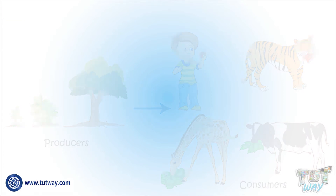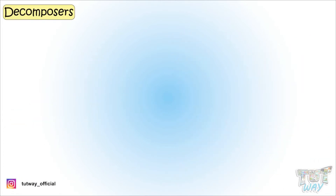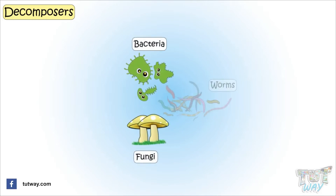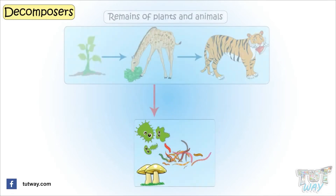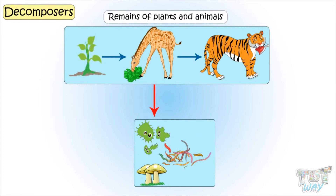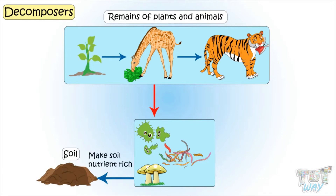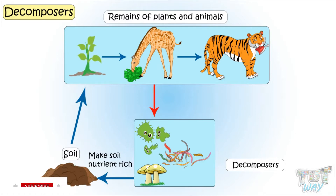Now let's see what are decomposers. Microorganisms like bacteria, fungi, and even worms eat the dead animals and plants. And when they eat these dead remains of animals and plants, they convert them into particles that again become part of the soil and make the soil nutrient rich, which is again used by plants to grow and make food. Thus, there is a flow of energy in the form of a cycle that never ends.